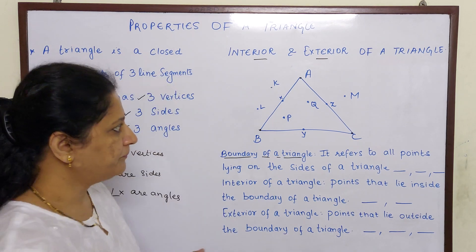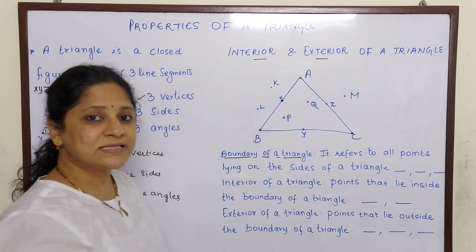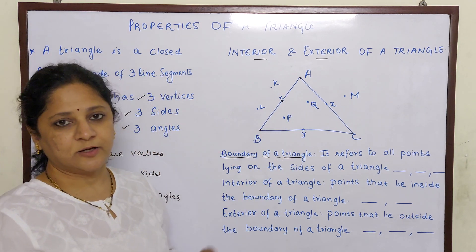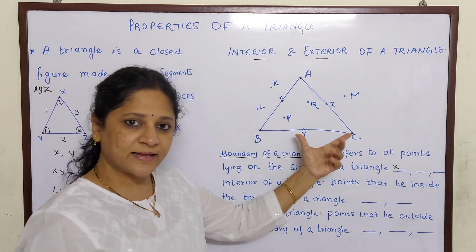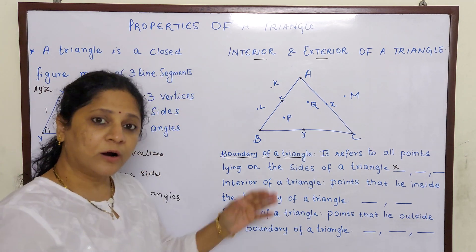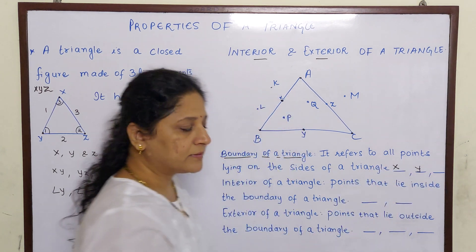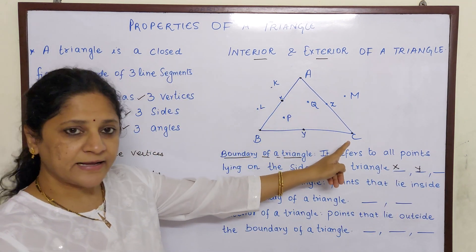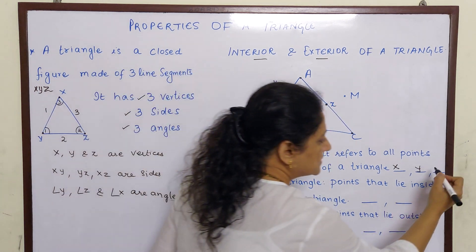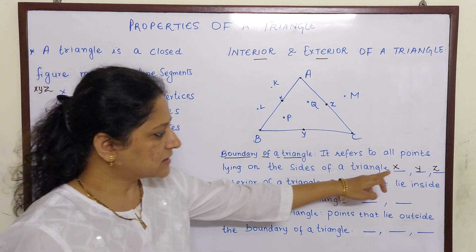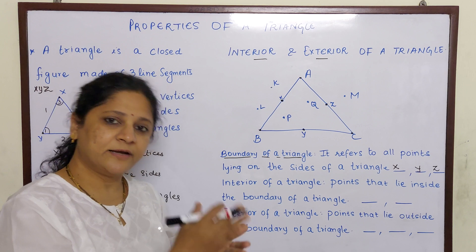Let us identify them. Now here, AB is one side and point X is lying on that side — so that is a boundary point. Then BC is the second side and Y is lying on that side — so that is also a boundary point. And the third side AC — point Z is sitting on that side — so this is also a boundary. So X, Y, Z are all the points lying on the sides of the triangle.